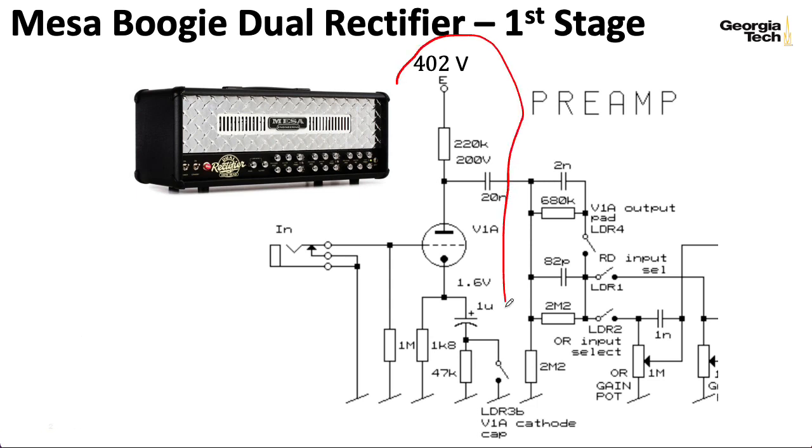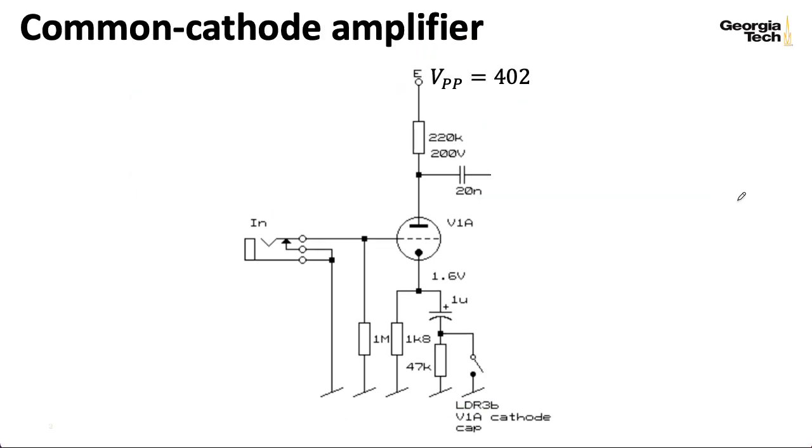We're going to be focusing on the part of the circuit right here. So even on its own, this initial input stage is more complicated than what you'll find in a lot of amplifiers, and it has to do with this network down here. So LDR here stands for light dependent resistor. The Mesa Boogie has a lot of different configurations that you can put the amplifier in, and these light dependent resistors are basically being used as switches. So rather than having a whole bunch of mechanical switches, these are being used as electrical switches to allow a bunch of settings in the amplifier to change at once.